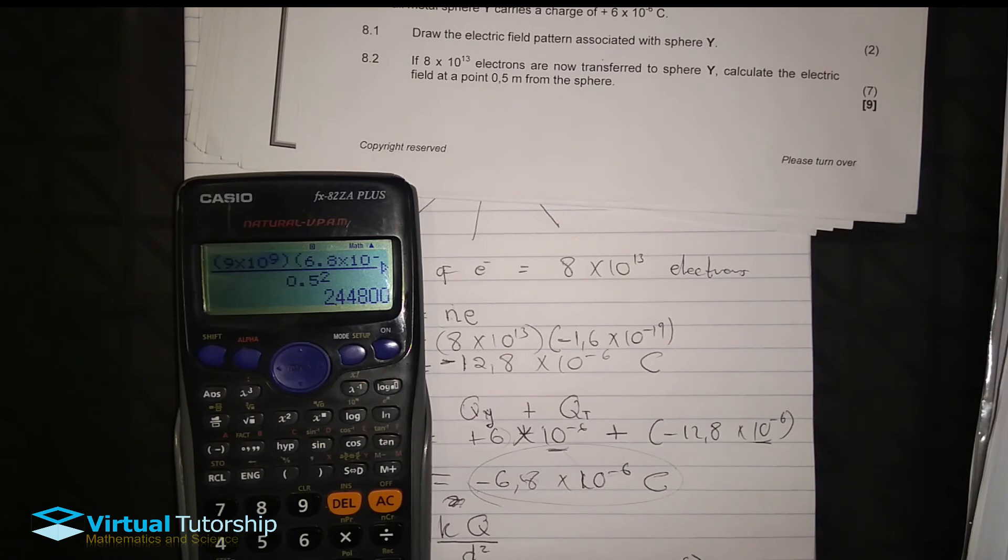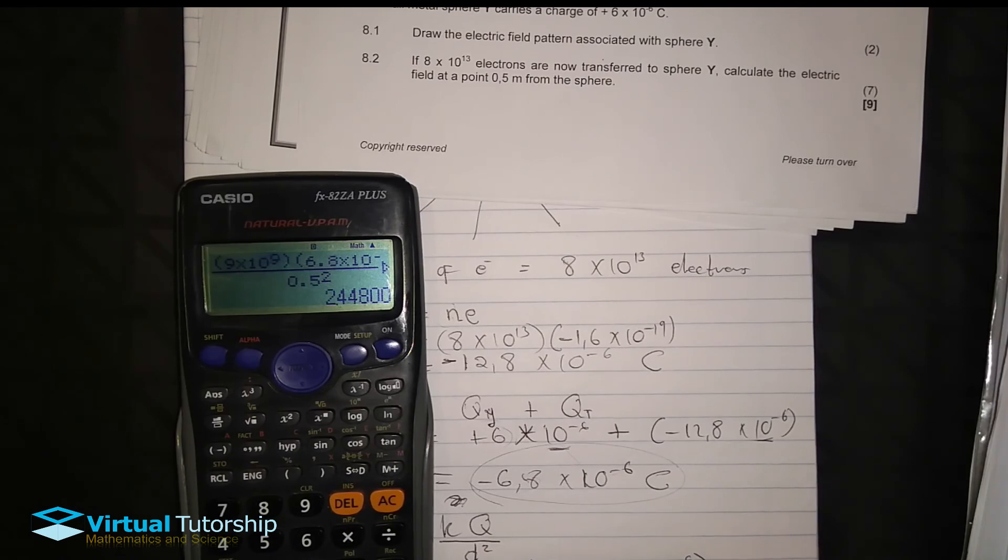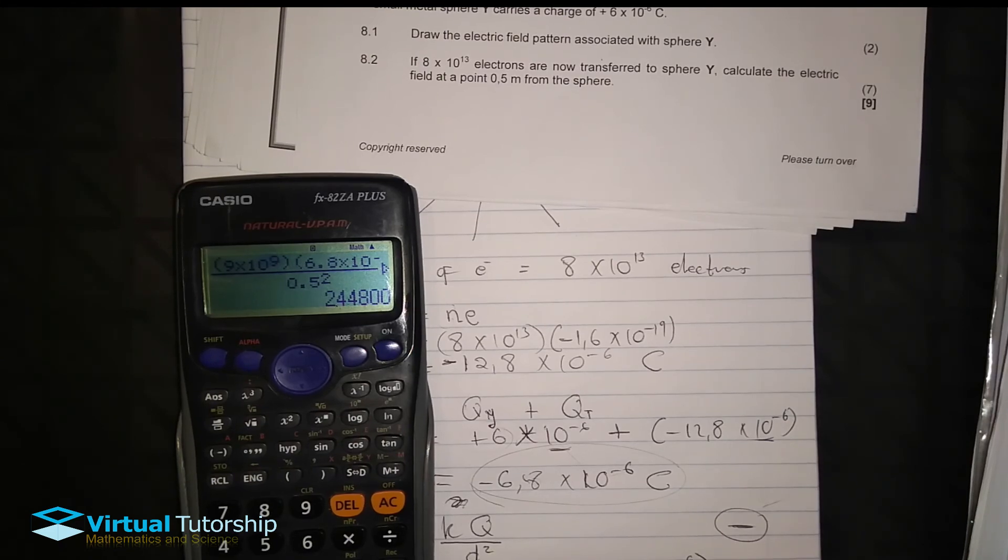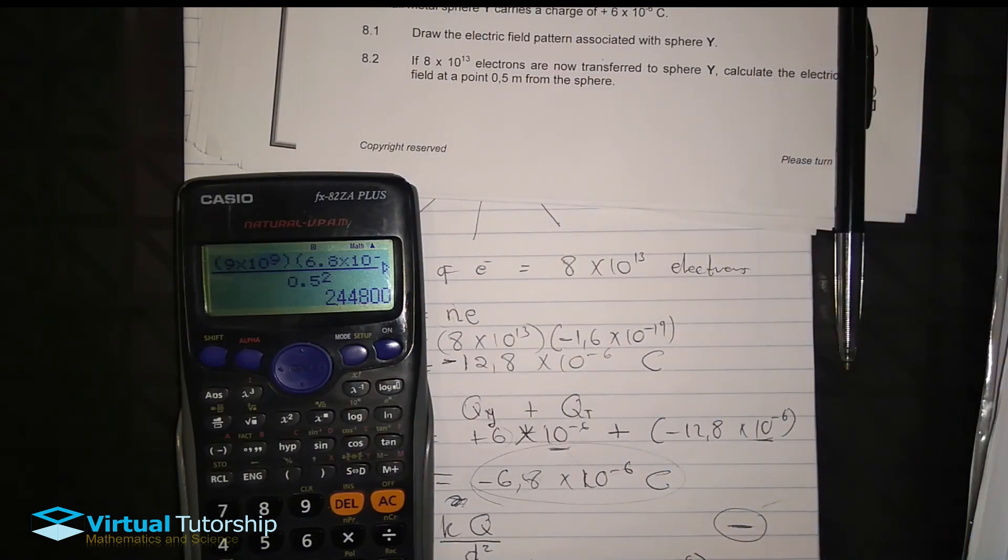Answer. Answer is 244,800. The unit is newton per coulomb and it's towards sphere. Remember, the direction: positive, it's away; negative, it's towards the charge. So answer here. And then this concludes our video for question 8.